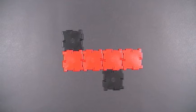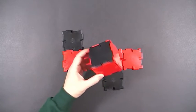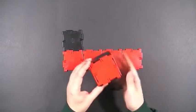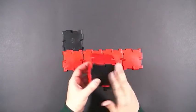There are many different ways to create the net for a cube. This is just one example. When you fold it up, you're going to get this. Of course, each side is a square.